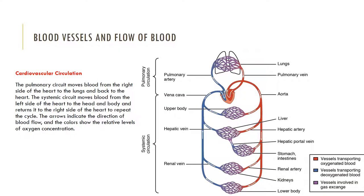This slide shows the cardiovascular circulation. Arteries always carry blood away from the heart to the capillaries and are typically colored red on models because in general they carry oxygenated blood. Capillaries are the smallest, most abundant type of blood vessel and permit diffusion between the bloodstream and interstitial fluids in order to facilitate nutrient and waste exchange. Veins always return blood from the capillaries to the heart and are typically colored blue on models because in general they carry deoxygenated blood.